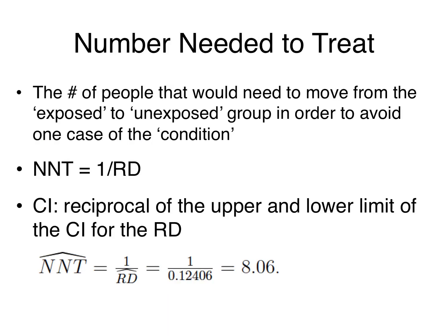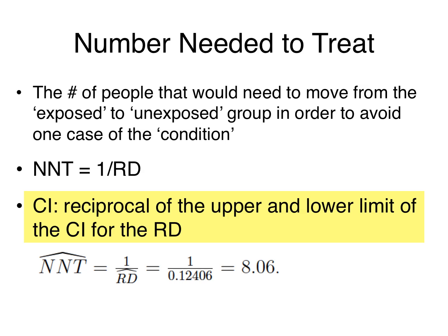The number needed to treat is related to the risk difference. This is the number of people that would need to move from the exposed to unexposed group in order to prevent one case of the disease or condition. The number needed to treat is the reciprocal of the risk difference — one divided by the risk difference. In our example, 8.06 mothers would need to not smoke during pregnancy to have one less case of child obesity. Since you can't have 0.06 of a mother, we round up to nine.